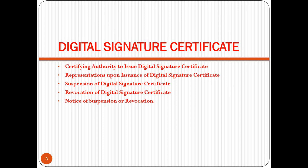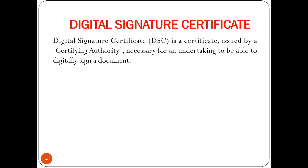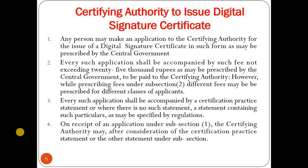First we will go through digital signature certificates. Under this we will study five topics: certifying authority to issue digital signature certificate, representation upon issuance, suspension, revocation, and notice of suspension or revocation. A digital signature certificate is the certificate issued by a certifying authority (CA) necessary for undertaking to be able to digitally sign a document.